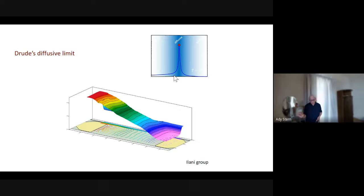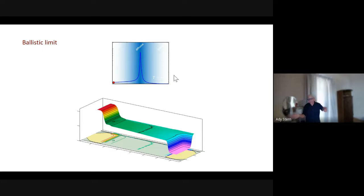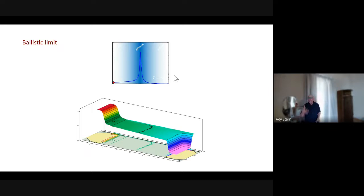Then you turn on the density higher, which means the system effectively gets much cleaner because impurities are screened. Look what happens: there is no voltage drop at the center of the device at all. All the voltage drops are at the two contacts — half at each, distributed equally — and again this follows the Landauer prediction very well. Those are the two limits we know of.